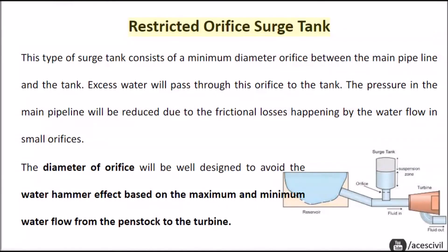Restricted orifice surge tank: This type of surge tank consists of a minimum diameter orifice between the main pipeline and the tank. Excess water will pass through this orifice to the tank. The pressure in the main pipeline will be reduced due to the frictional losses occurring from water flow through the small orifice. The diameter of the orifice is well designed to avoid the water hammer effect, based on the maximum and minimum water flow from the penstock to the turbine.